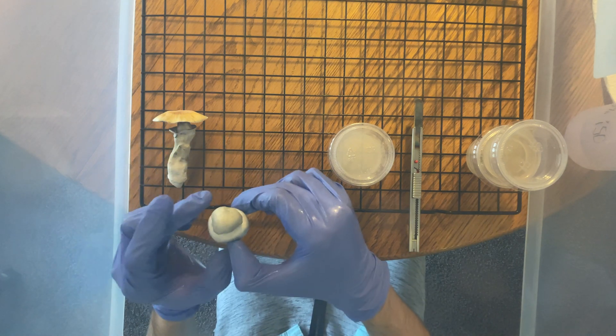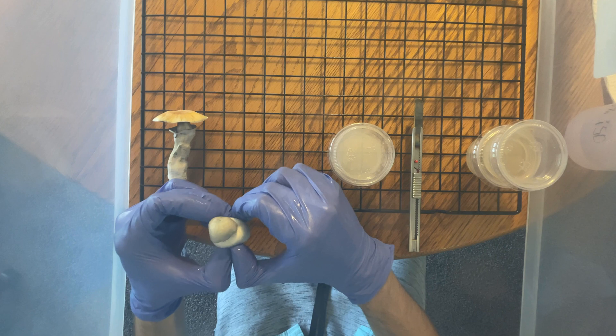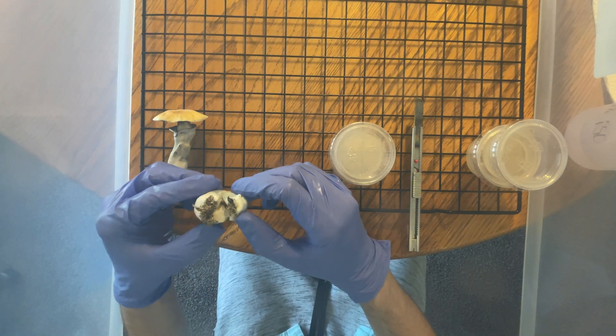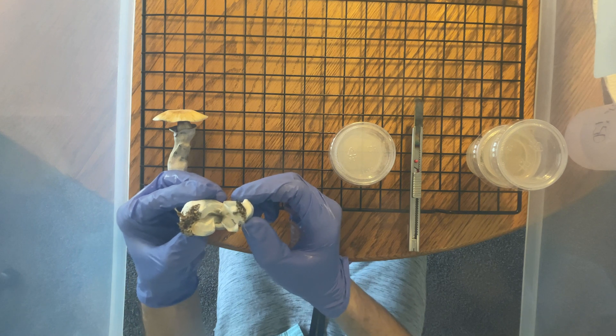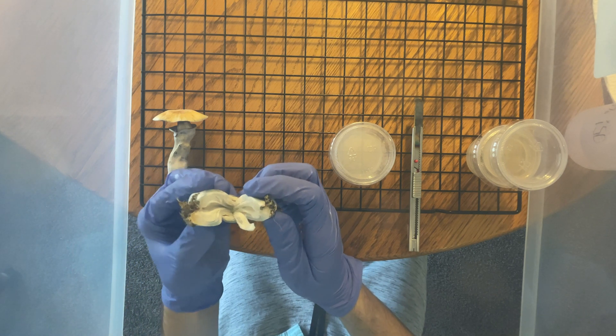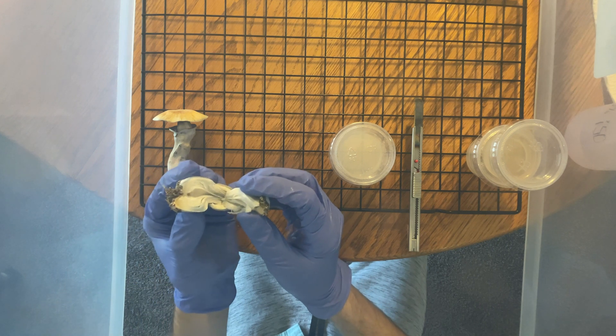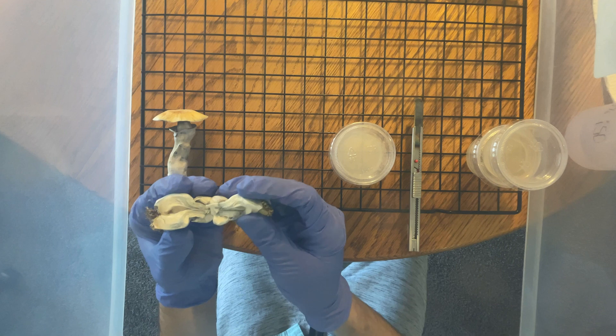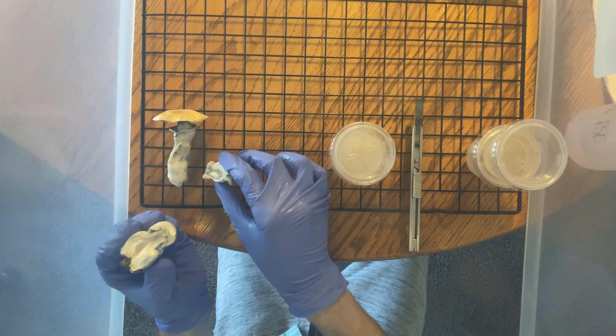Next, pinch the base of the fruiting body until it starts to tear down the middle. This is important, as you don't want to be cloning from the outer layer of the mushroom, as that would cause a lot more contamination as opposed to the inside. It might be a little difficult when you get to the cap, but just slowly work it down the middle and it should end up ripping almost perfectly.